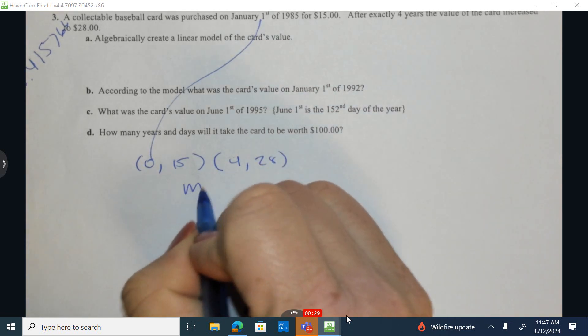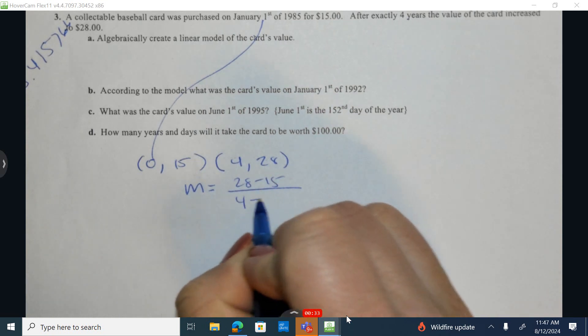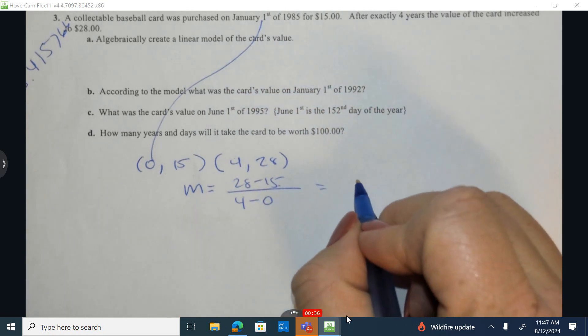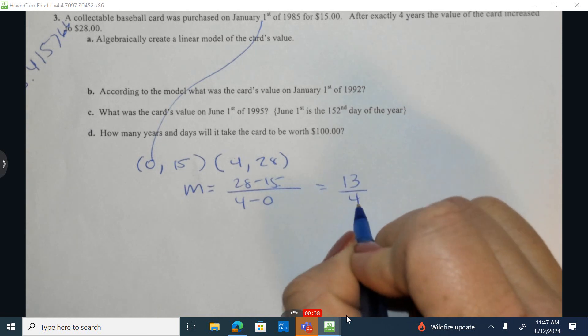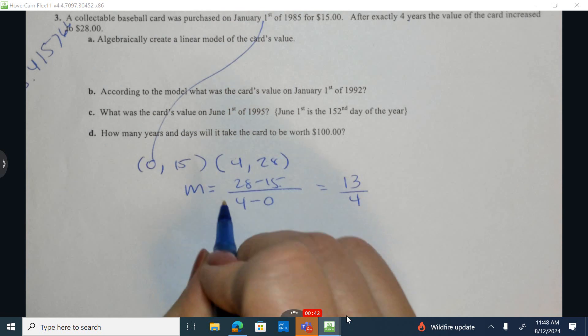So let's come up with the rate of change. So y2 minus y1 over x2 minus x1. The difference here is a difference of 13 over 4. So that's the average rate of change between these two years.